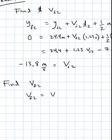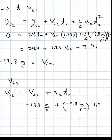And very quickly we can find the final velocity of particle 2. V final of 2 is V initial of 2 plus A T minus 13.8. You keep those negative signs, the acceleration minus 9.8, the time 1.23.